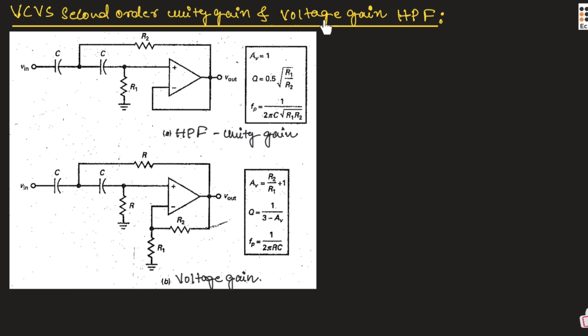If we say voltage gain, it means in the feedback we are connecting two resistors, and this circuit will be acting as a voltage gain circuit. The gain AV is equal to R2 divided by R1, plus 1. That's why it is known as voltage gain.